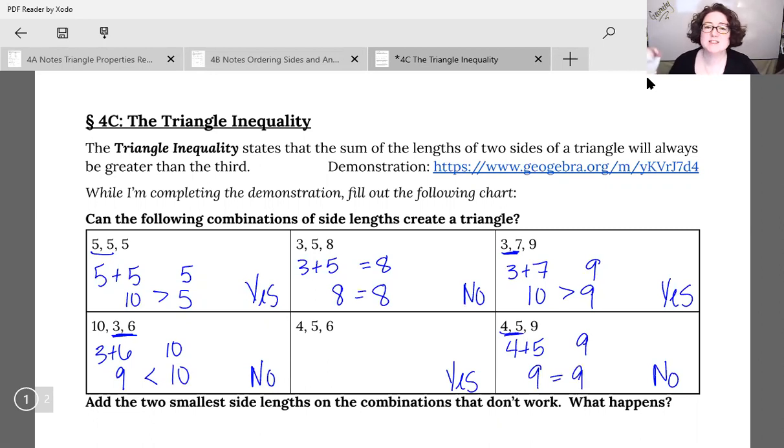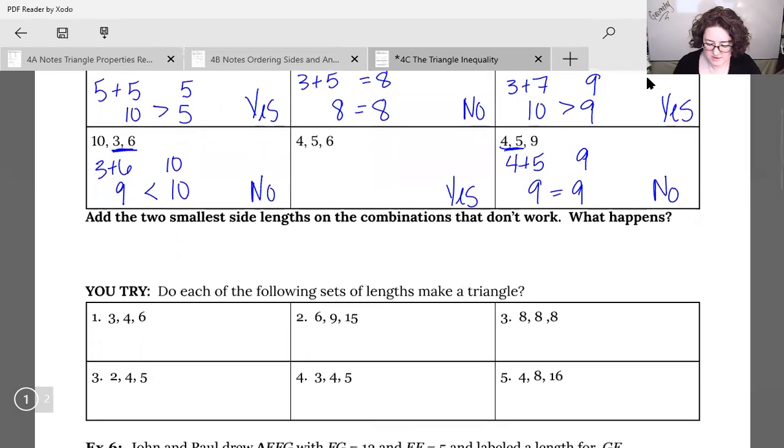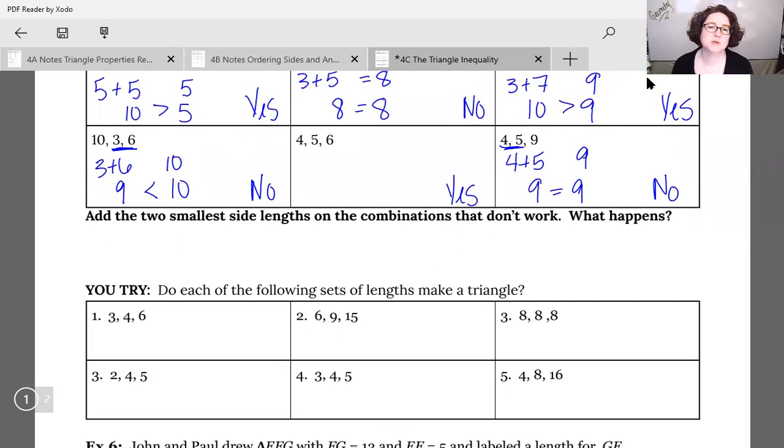Go ahead, pause the video and try out this next set without using that demonstration. If we're just using the rule, add the two smallest sides, you should have found number one works. 3 plus 4 is 7, greater than 6. Number two doesn't work. 6 plus 9 equals 15, it's not bigger. 8, 8, 8, perfect equilateral triangle, that one works. 2, 4, and 5, 2 plus 4 is 6, bigger than 5. 3, 4, and 5 absolutely works. 3 plus 4 is 7, bigger than 5. And 4, 8, and 16, 4 plus 8 is only 12, that one's not going to work.